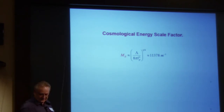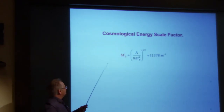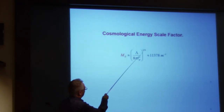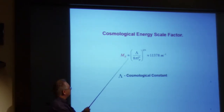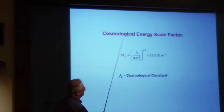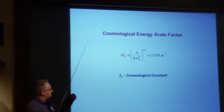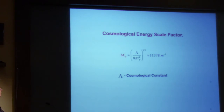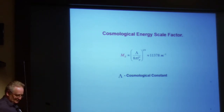I wanted to point out that this ME value is equal to the fourth root of the cosmological constant divided by eight pi, then multiplied by the Planck length squared — it's about 10 to the fourth meters inverse. The poignant thing is that it contains the cosmological constant.